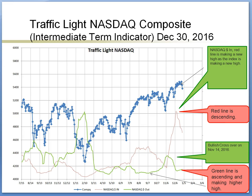Here is a zoom-in on the current traffic light Nasdaq with some bullish and bearish observations. On the bullish side: first, the red line made a new high while the index made a new high; second, there was a recent bullish crossover. On the bearish side: the red line started to descend on December 13th — this information was released on the subscriber website in a timely manner — and the green line started to ascend. Another bearish sign is that the green line is making a higher high, though some of this information is not synchronized with the traffic light for Dow.